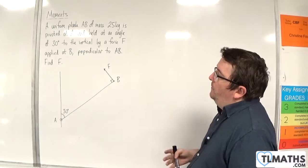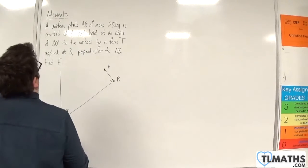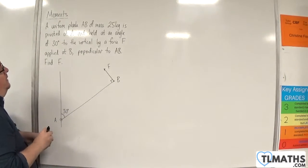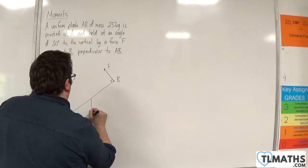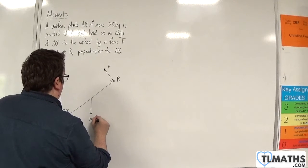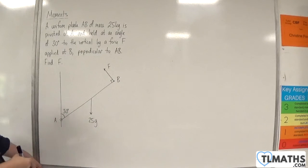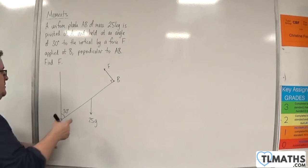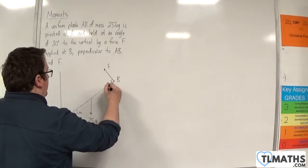Okay, so this is my diagram, and the plank, we've been told, is uniform. So its weight acts through the centre, and it has a mass of 25 kilos, so its weight will be 25G. Now, we haven't been told the length of the rod, so I could just call that length L and that length L.